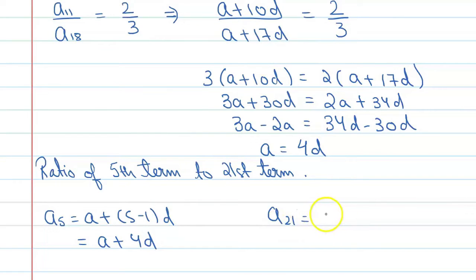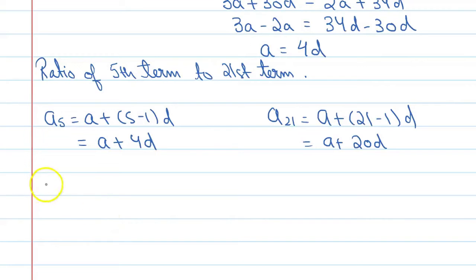Similarly, if we talk about a21, this will become a plus 21 minus 1 into d, so this will be a plus 20d. Now put the values, this is a5 upon a21, you can say a plus 4d upon a plus 20d.